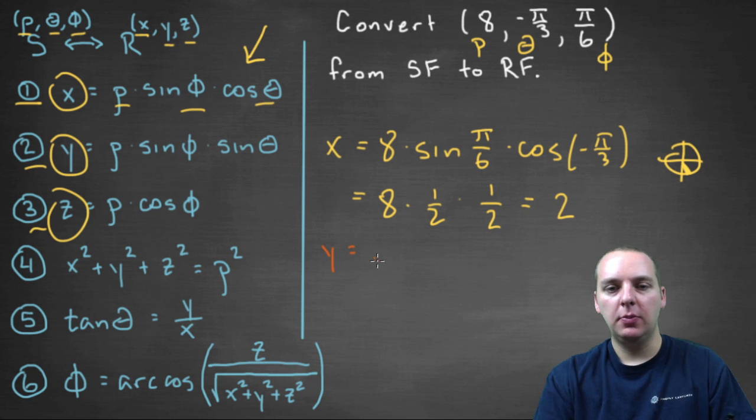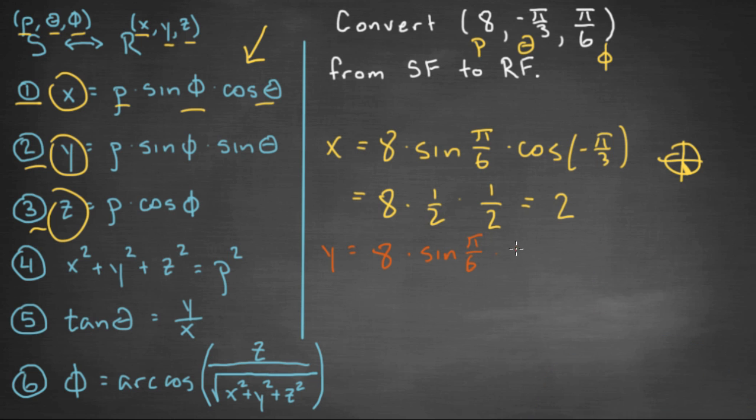Y would be rho, which is 8, times again sine of phi, which is sine π/6, again same thing, times not the cosine of theta, but this time the sine of theta, which is -π/3.